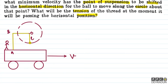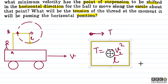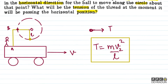Now for part two of the question: what will be the tension at the moment the ball passes the horizontal position? When the particle arrives at this horizontal position, the only force toward the center is the tension. So tension equals mv₂²/L. We now need to find v₂ using energy conservation.